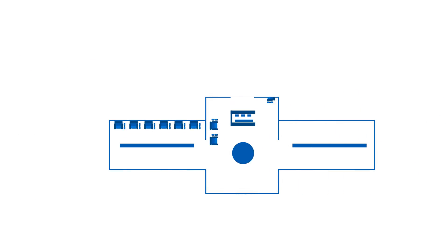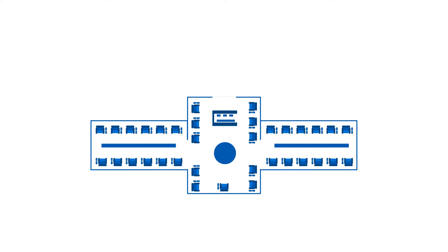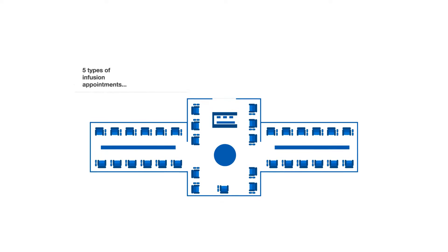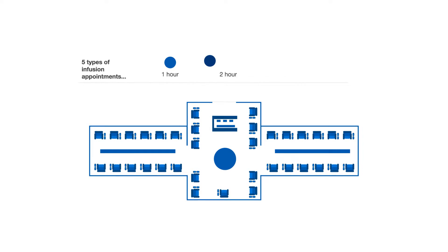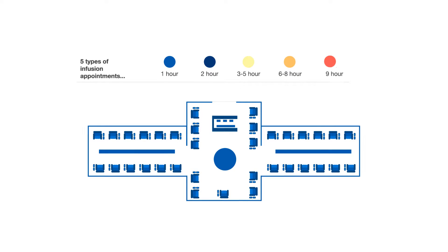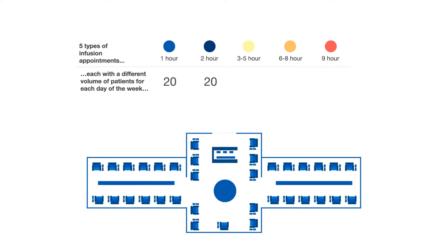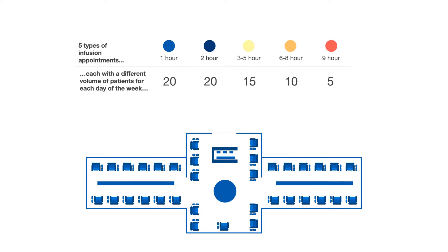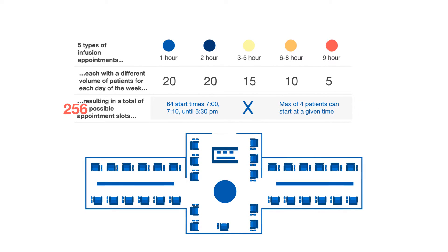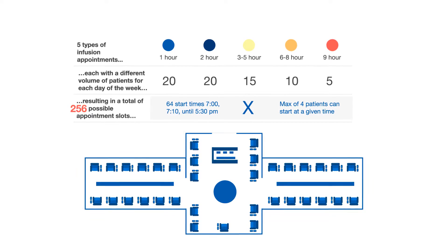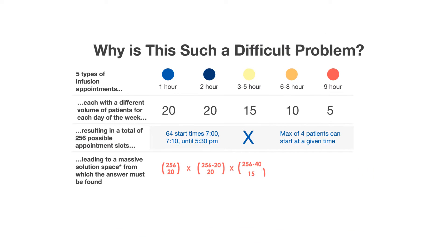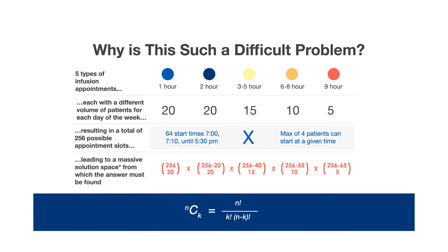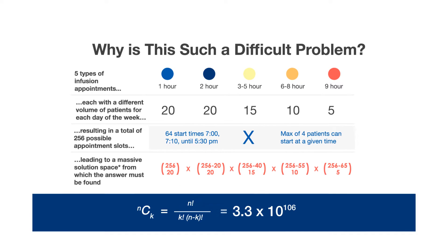Let's take a 35-chair infusion center that operates eight hours per day, treating five types of appointments: one hour, two hours, three to five hours, six to eight hours, or nine or more hours. Four sets of patients can start their treatment at ten-minute intervals — that's 256 possible start times or slots per day. What's the number of ways in which these patients can be started? A number with over 100 zeros behind it.